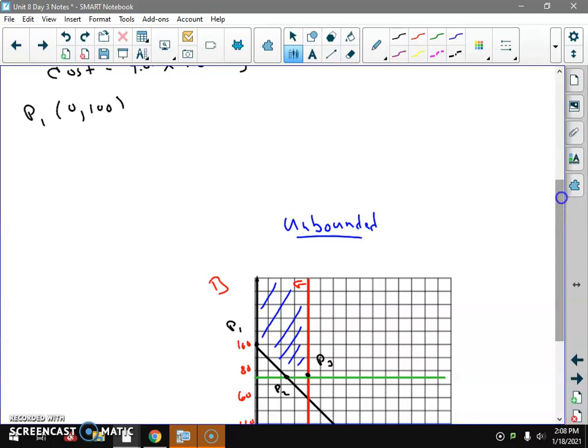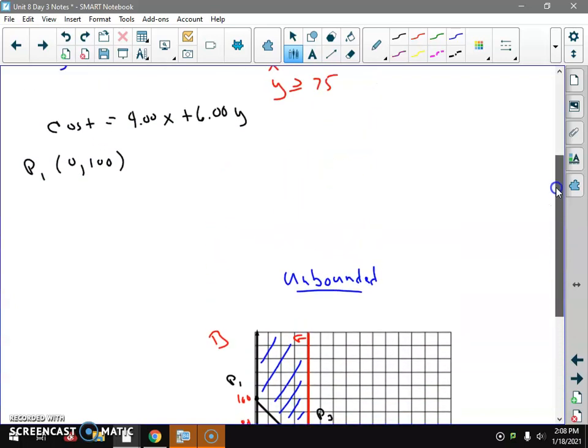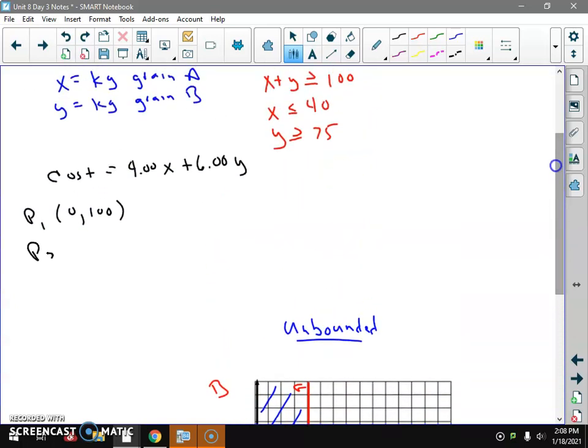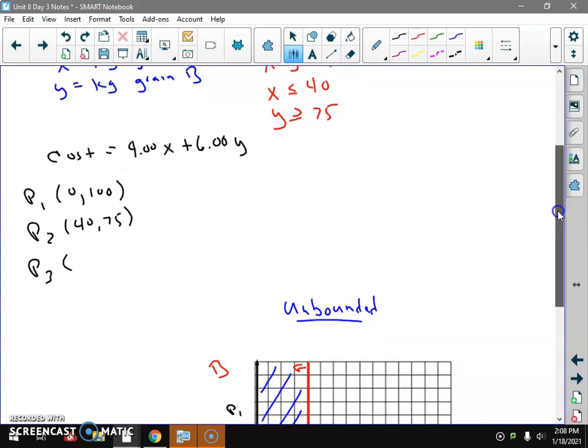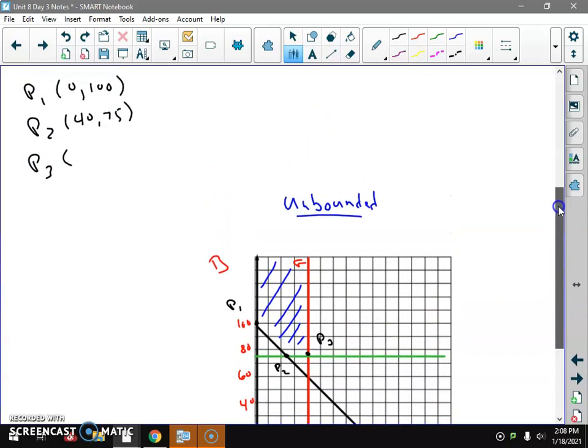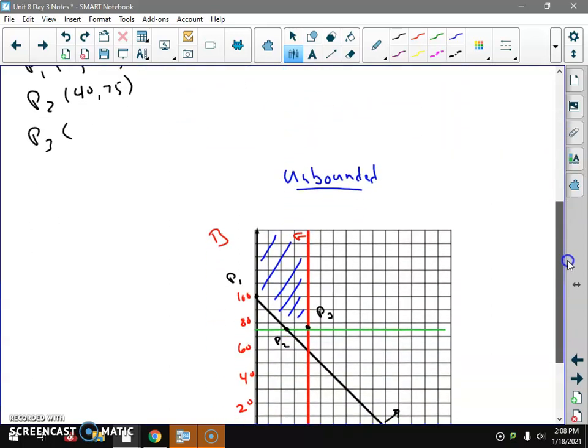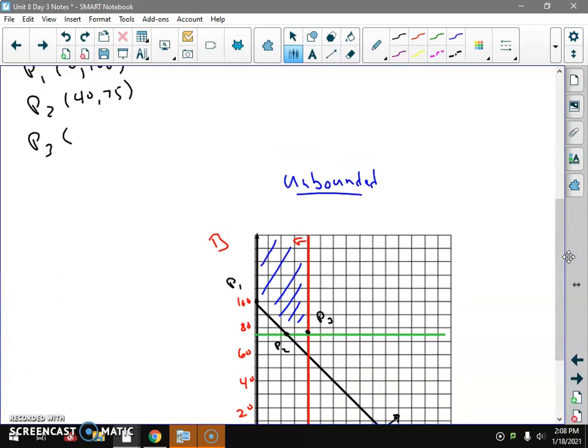P1, I think, is pretty easy to find. It's all food B: 0, 100. Point 2 is a mixture. Point 3 is the intersection of the 40 and 75. So that one's pretty easy. P2 is 40, 75. P3, if I was going to ballpark it, it would be somewhere, I don't know, 25, 75. But if we solve the system, it's the green and the black. X plus Y equals 100, Y equals 75. Plug it back in. Sure enough, X equals 25. Just nice to verify because sometimes a graph is not exact. So that's 25, 75.